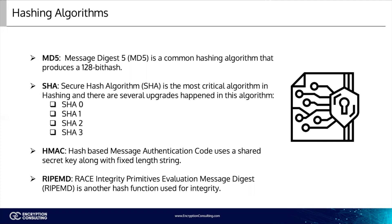SHA — Secure Hash Algorithm — is another hashing algorithm. There are several variations of SHA grouped in four families: SHA0, SHA1, SHA2, and SHA3. SHA0 is the initial algorithm in the SHA series and is currently not in use. SHA1 is an updated version that creates 160-bit hashes, similar to MD5 except it produces 160 bits instead of 128. SHA2 improved SHA1 to overcome potential weaknesses and includes four versions: SHA256 creates 256-bit hashes, SHA512 creates 512-bit hashes, and SHA224 and SHA384 create truncated versions of SHA256 and SHA512 respectively.